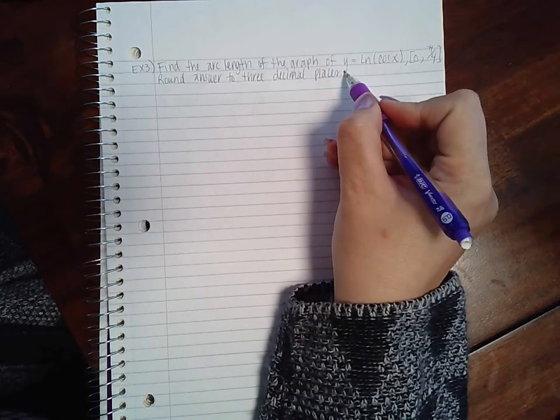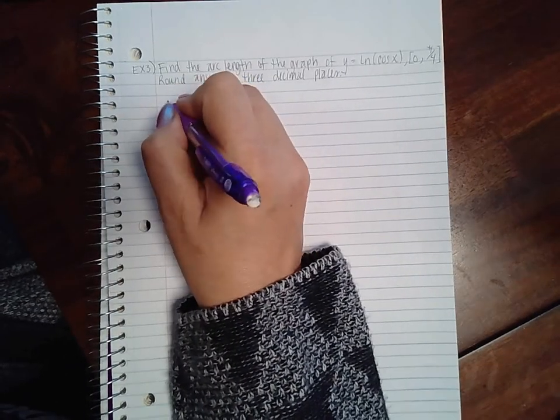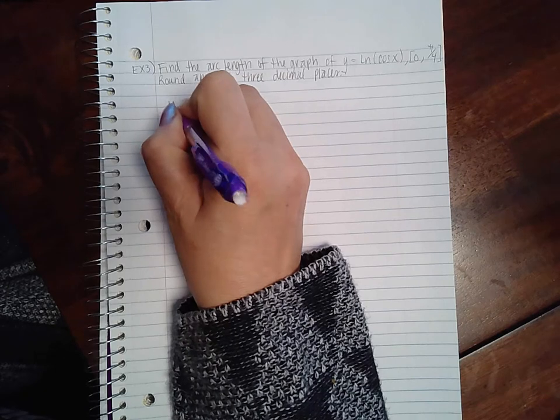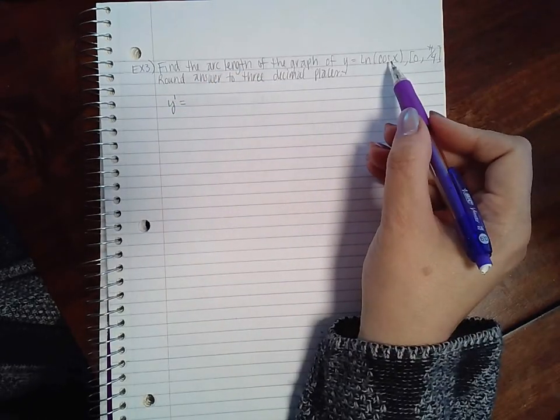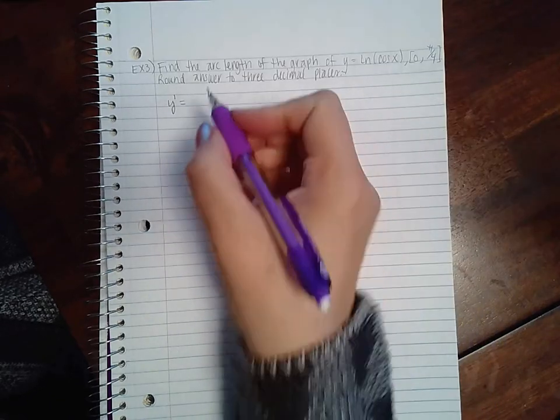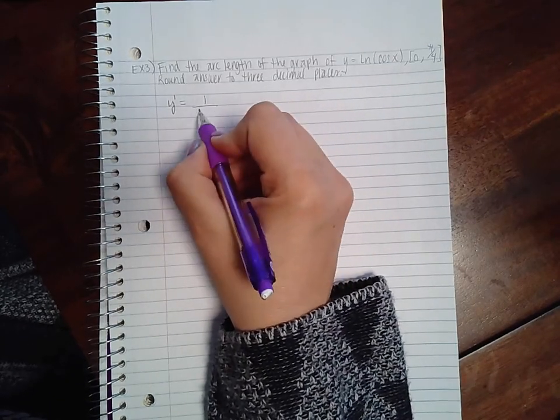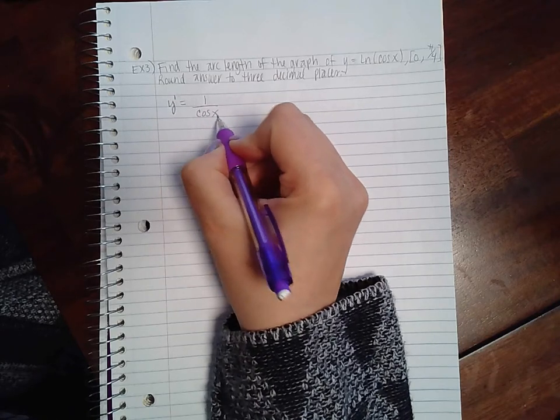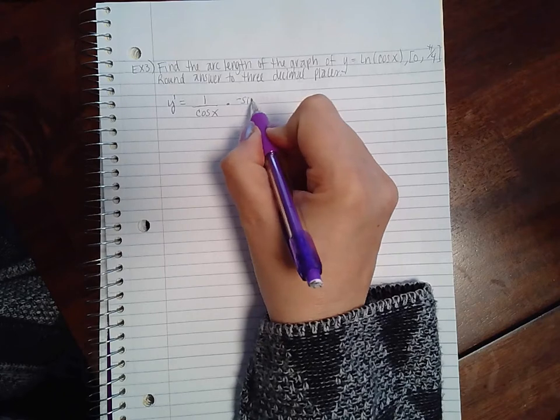In this case they gave us y and we didn't have to figure anything out, but in order to apply the arc length formula we do have to have y prime. So we need to take the derivative of this. The derivative of a natural log is 1 over the original argument times the derivative of that argument which is negative sin(x).